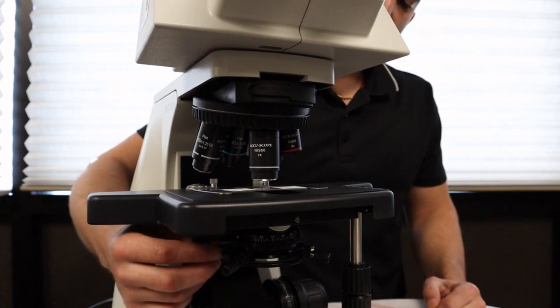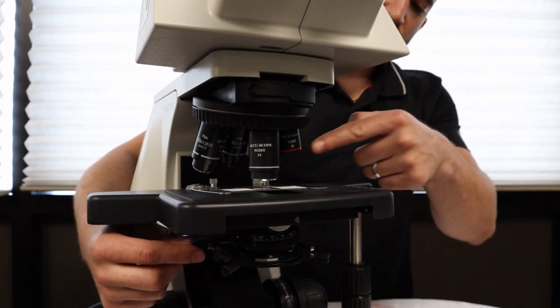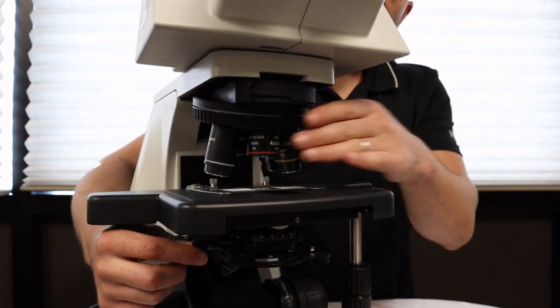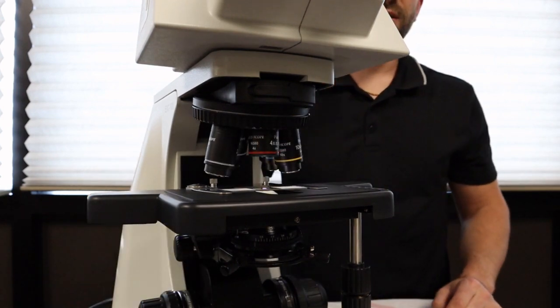This demonstrates a flip-in, flip-out condenser. When you're using the 2x objective, you'll have the condenser lens flipped out, and then when you move to the other objectives, you flip it in place.